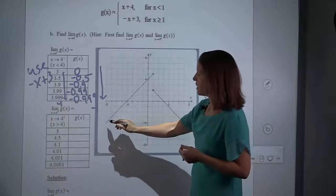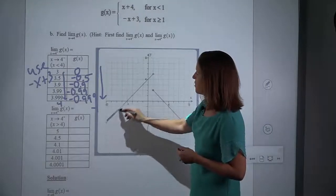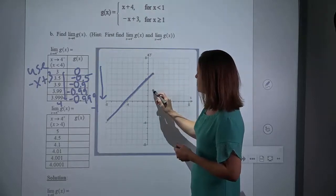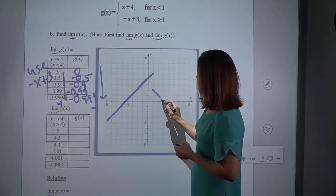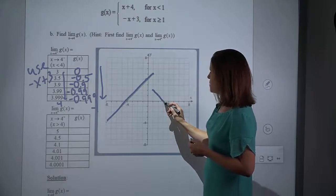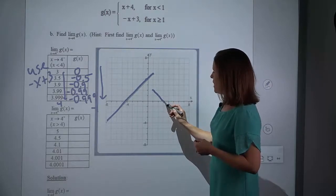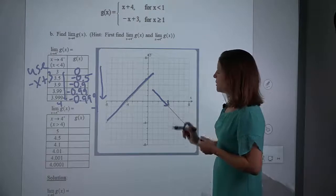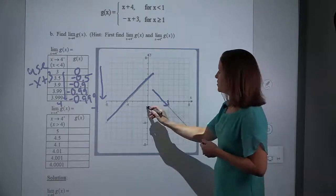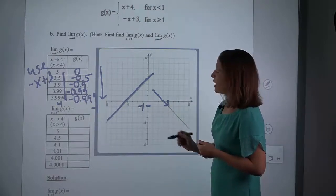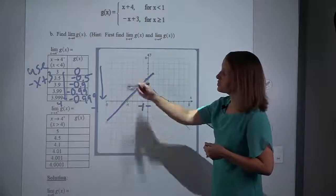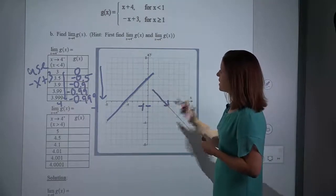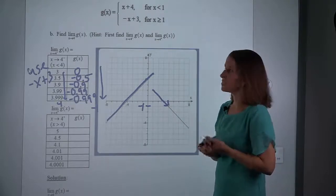That's exactly what we saw with our table as well — we could just trace it and say it's heading towards negative 1 and we're done with that part. Now we want to check from the right. If I am coming from x's that are to the right of 4, so they're greater than 4 but close to 4, I could start with values like 5 and get closer and closer. All of these values are greater than 1, so all of these qualify for negative x plus 3.